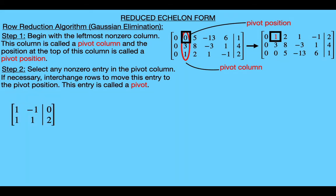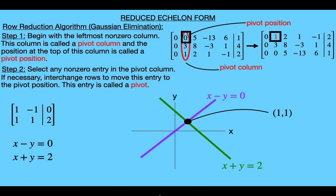We call this entry a pivot because we use it to pivot the other equations around the solution set. To see what I mean, consider an augmented matrix representing a linear system of two equations. Graphing these two equations — the purple line for the first equation and the green line for the second — they intersect at the solution point where x and y both equal one. For this matrix there are two possible choices for our pivot: the one from the first equation or the one from the second equation.